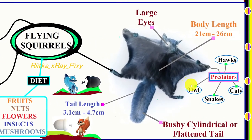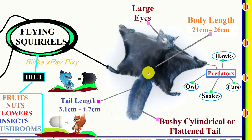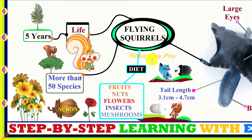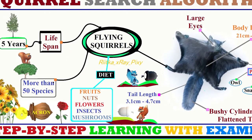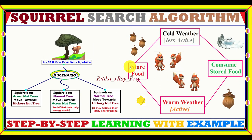Flying squirrels have large dark eyes and their total body length is about 21 to 26 centimeters. They have a bushy cylindrical tail with a length of about 3.1 to 4.7 centimeters. Their predators include owls, snakes, hawks, and domestic cats. There are more than 50 species of flying squirrels worldwide, with a lifespan of about 5 years. They feed on fruits, nuts, flowers, insects, mushrooms, acorns, and hickory nuts.